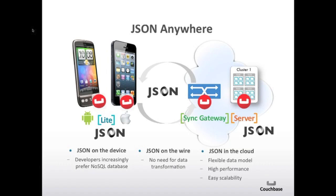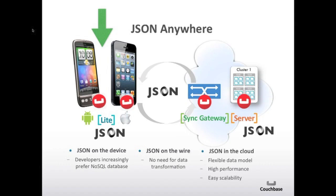What we think the solution is, is what we're calling JSON Anywhere. Under the green arrow, we've got the Couchbase Server, which is a clustered JSON database with a proven track record that scales. In the middle tier, we've got JSON on the wire, and we use Sync Gateway for that, which is essentially an adapter between Couchbase Server and the final tier — which is Couchbase Lite, a JSON database on the device.